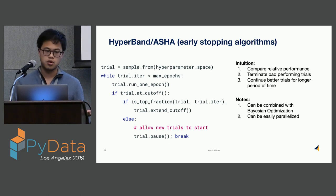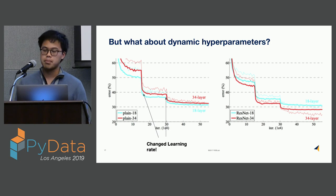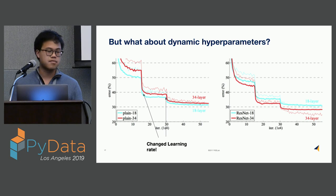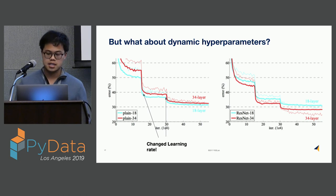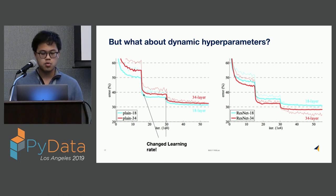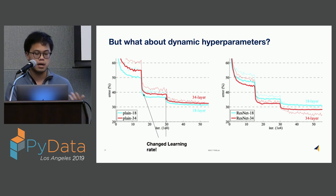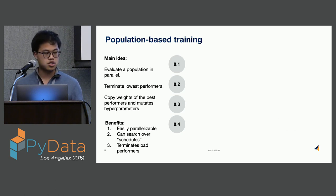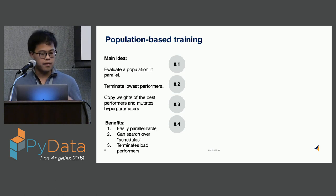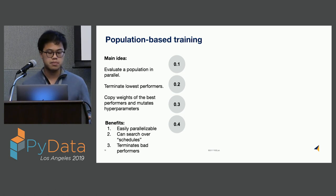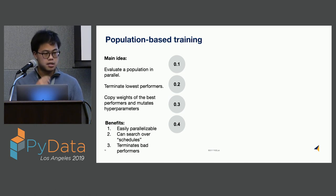What's next in the deep learning world? It turns out that in deep learning, hyperparameter schedules matter a lot. This means we may change the value of a hyperparameter — such as learning rate and momentum — during the course of training. This is actually required in a lot of computer vision and natural language processing tasks to get state-of-the-art results. There's a technique from Google that's able to explore these dynamic hyperparameter schedules, called population-based training, or PBT, from Google DeepMind. The main idea is that you evaluate a population of hyperparameters in parallel, terminate the lowest performers, copy weights from the best performers, and mutate those best performers a little bit in replacement of the lowest performers.